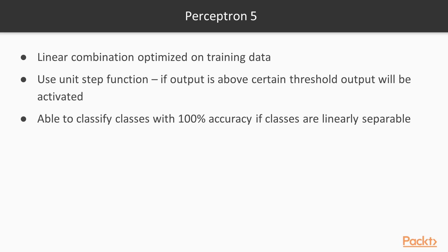As an activation function, we will use a unit step function. If the output is above a certain threshold, the output will be activated. A perceptron is able to classify classes with 100% accuracy if the classes are linearly separable.